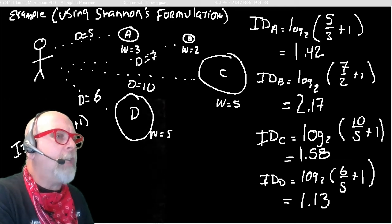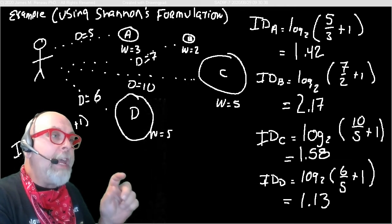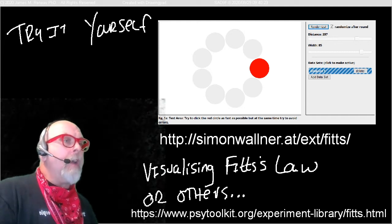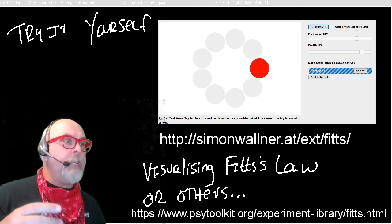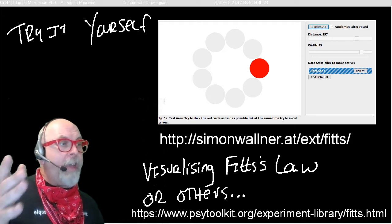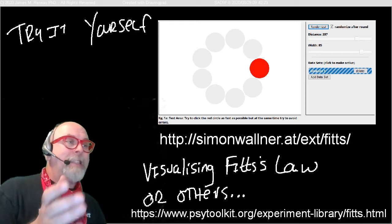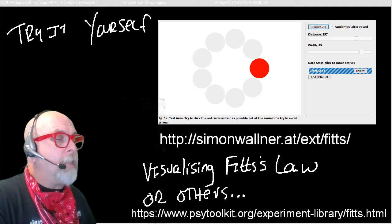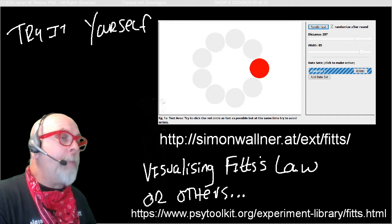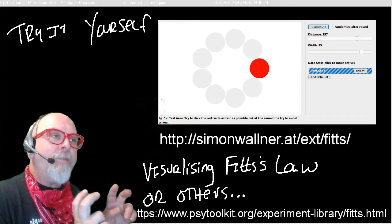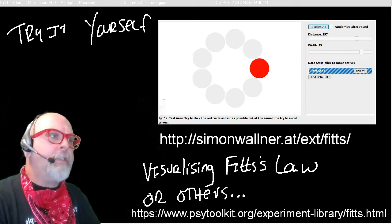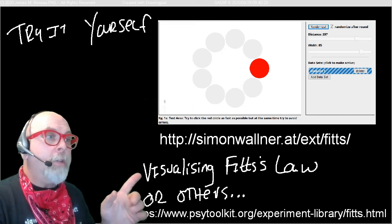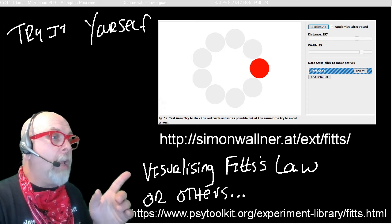Go out online as soon as our video is done here. And type into your favorite search engine, Fitz's Law. And it does have F-I-T-T-S apostrophe S. It's Fitz's Law, which is a little funny. But it was the spelling of his name. So go type in Fitz's Law and look for an online application that will let you test your speed. Test how fast you are at clicking targets of different sizes. This simonwalner.at website. And if you search for, using your favorite search engine, visualizing Fitz's Law, you'll see this link very, very quickly.